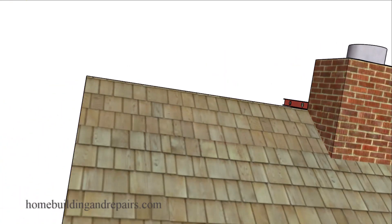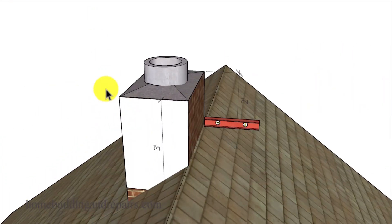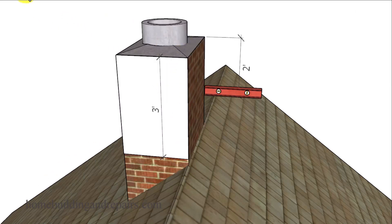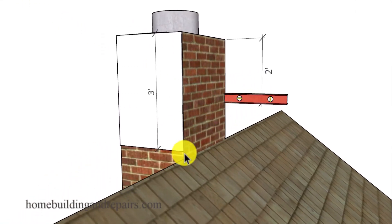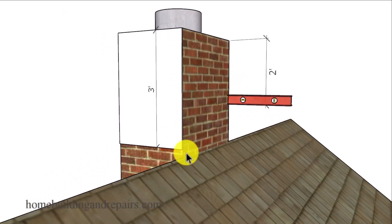And if we move it closer to the ridge, you can see where we're going to run into trouble here. Because even though we have our two foot minimum measurement here, we no longer have our three foot minimum measurement. And we'll simply need to raise the height of the roof. So again, three foot minimum for the chimney protruding out of the highest side of the roof.